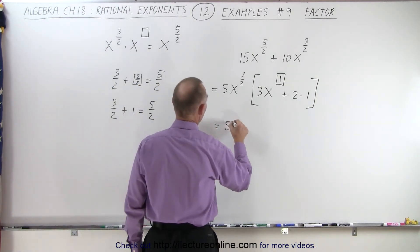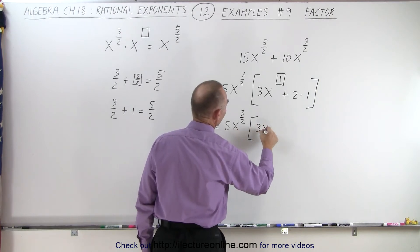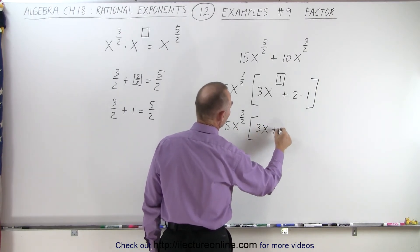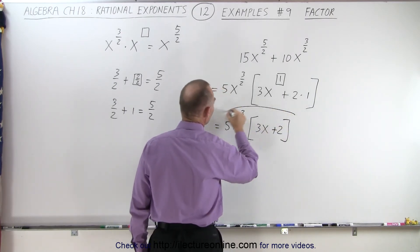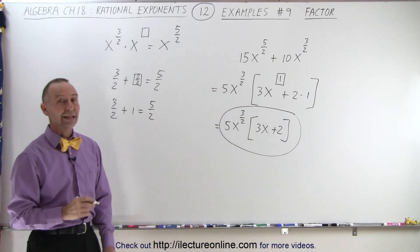And then simplifying that, we get this is equal to 5x to the three halves power times 3x to the first power, simply 3x, plus 2, and that is the simplified form after we factor it. And that is how it's done.